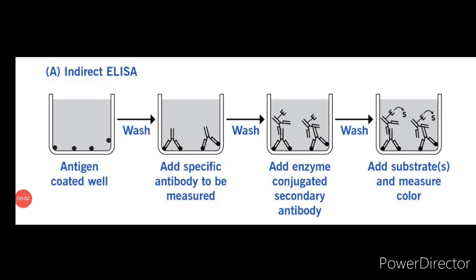Now let us understand the types of ELISA in detail. As discussed earlier, there are three types of ELISA: indirect ELISA, sandwich ELISA, and competitive ELISA. Now let us understand indirect ELISA.